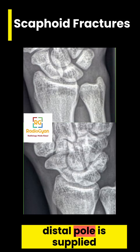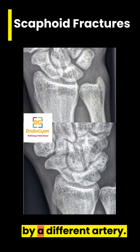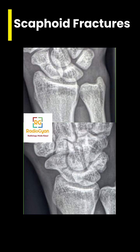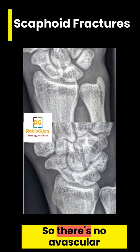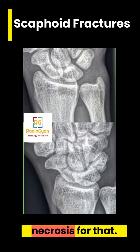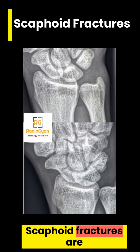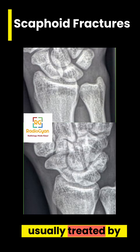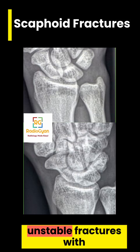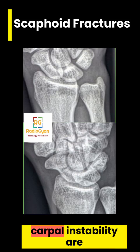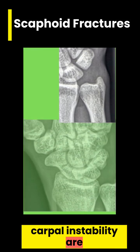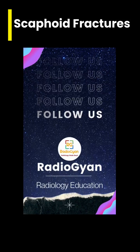The distal pole is supplied by a different artery, so there is no avascular necrosis for that. Regarding treatment: incomplete scaphoid fractures are usually treated by casting, while complex or unstable fractures with ligamentous tears and carpal instability are fixed with operative repair.